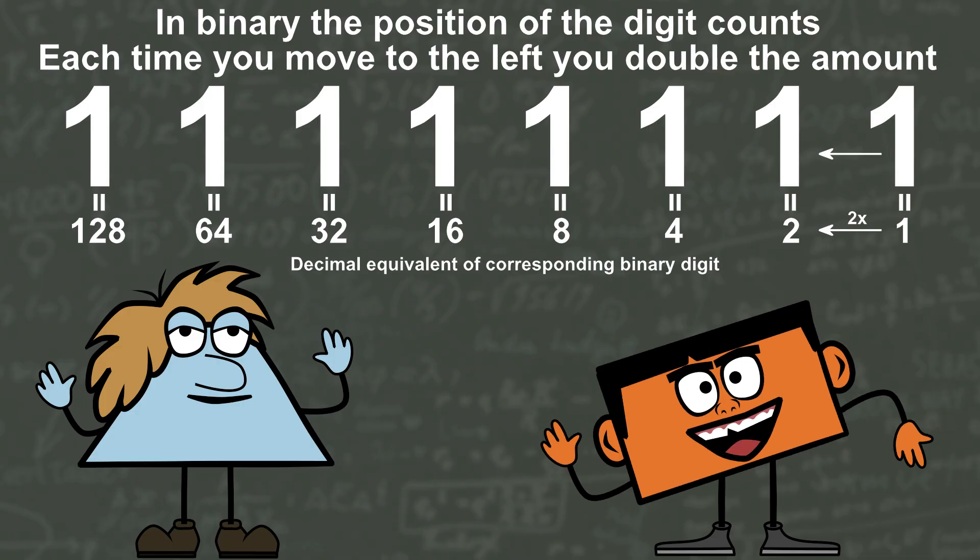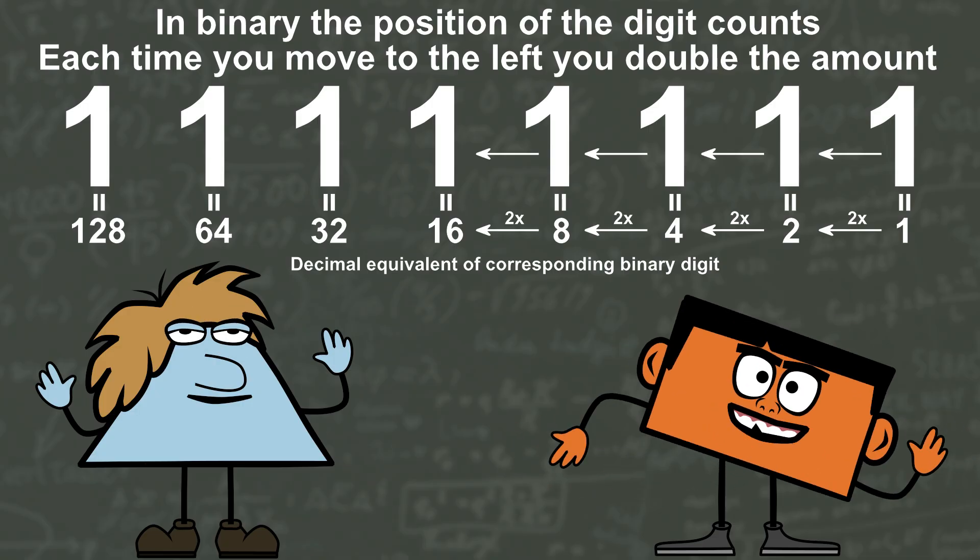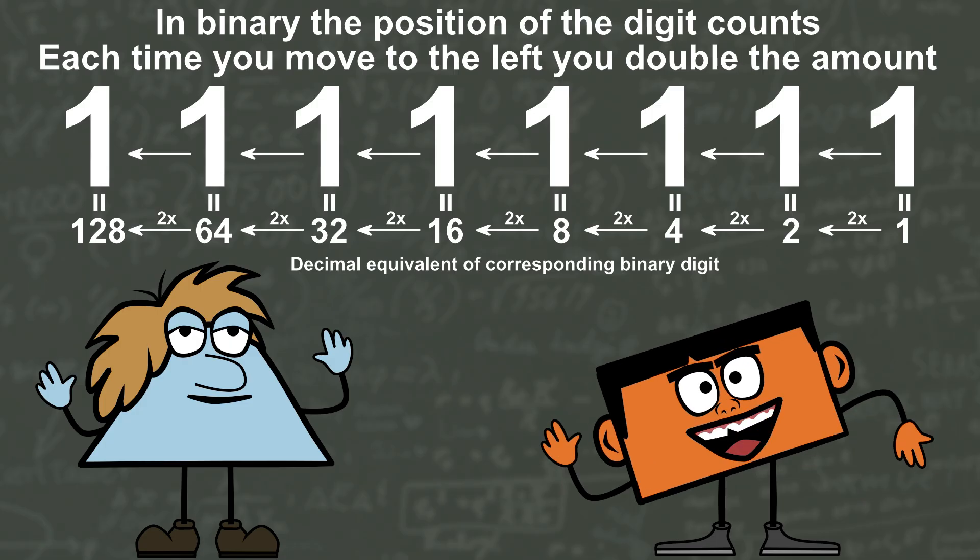In binary the position of the digit counts, each time you move to the left you double the amount.